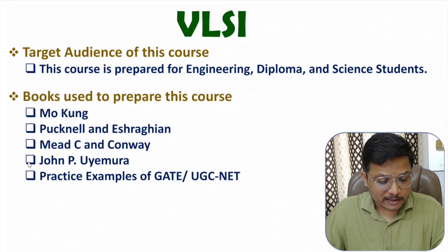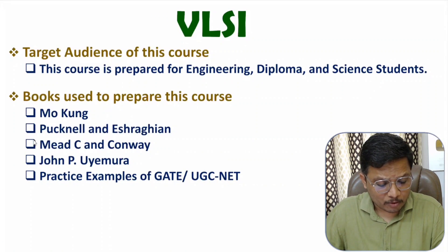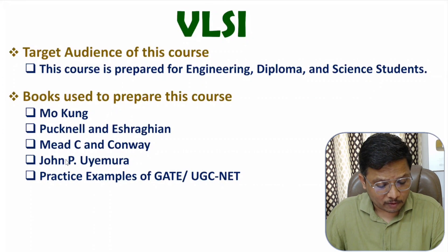The first book is of Mokung. The second book is of Pucknell and Eshagian. The third book is of Mead and Conway. And the fourth book is of John P. Uyemura.